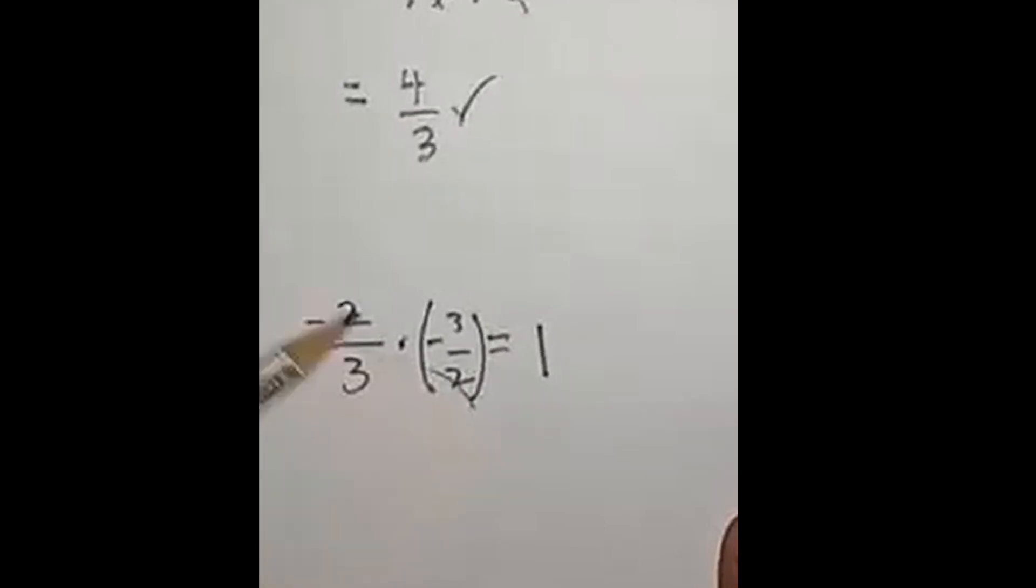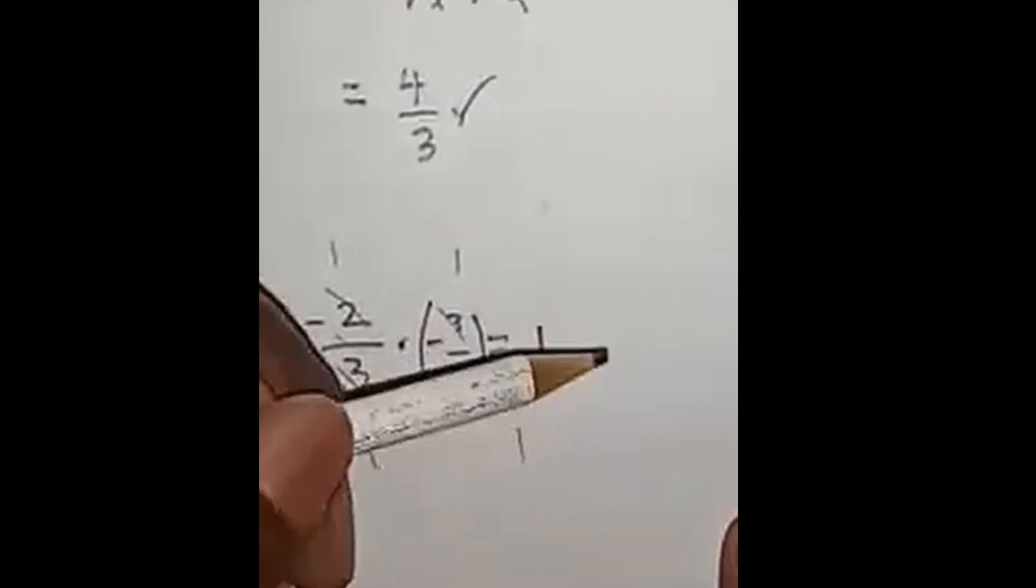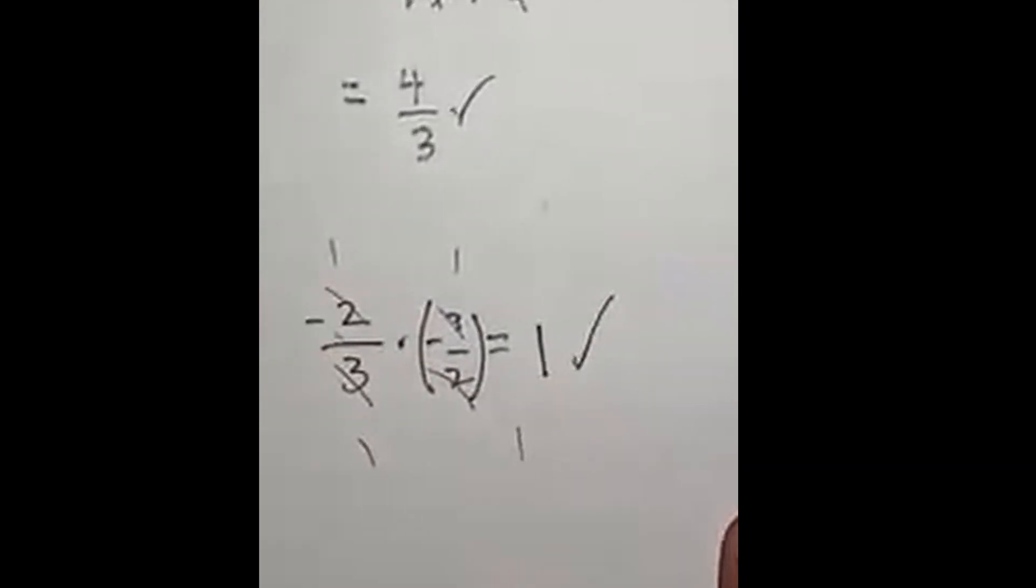Because cancel, cancel, cancel, cancel, cancel. Everything is 1. Negative negative is positive. 1 times 1 is 1, 1 times 1 is 1. 1 divided by 1 is 1. So that's your multiplicative inverse. It's a valuable tool that you will need going forward.